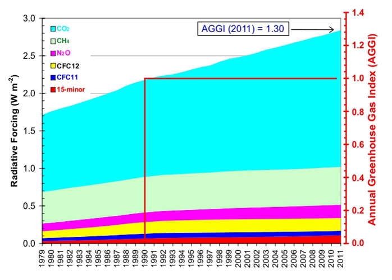The global warming potential (GWP) depends on both the efficiency of the molecules as a greenhouse gas and its atmospheric lifetime. GWP is measured relative to the same mass of CO2 and evaluated for a specific timescale. If a gas has a high radiative forcing but also a short lifetime, it will have a large GWP on a 20-year scale but a small one on a 100-year scale. Carbon dioxide is defined to have a GWP of 1 over all time periods. Methane has an atmospheric lifetime of 12 ±3 years, with a GWP of 72 over 20 years, 25 over 100 years, and 7.6 over 500 years according to the 2007 IPCC report.